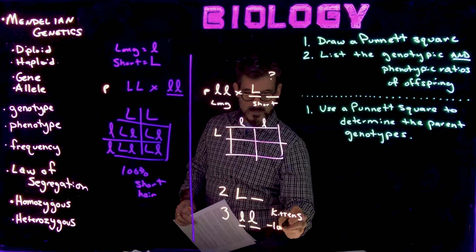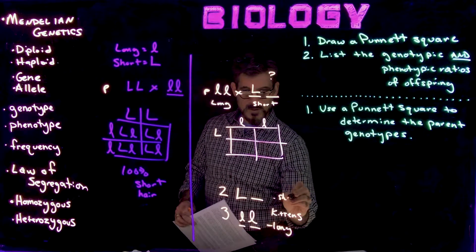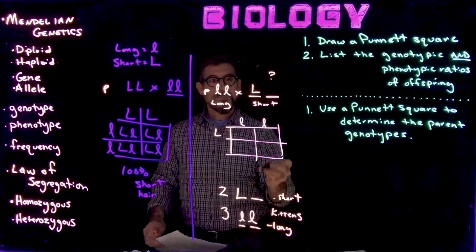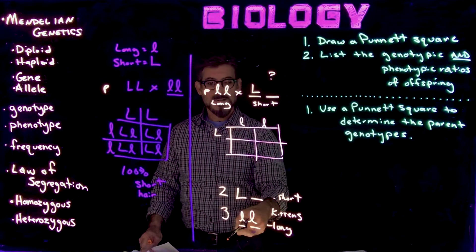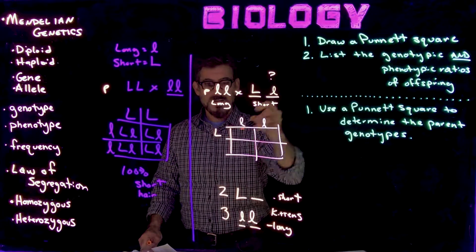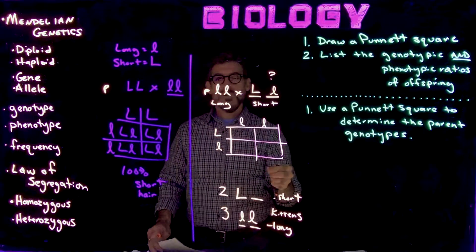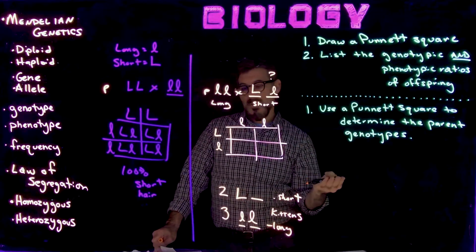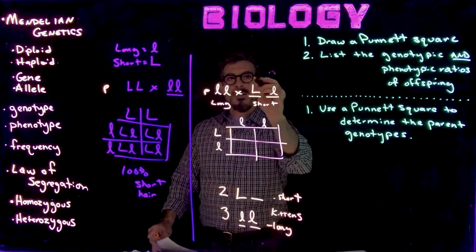So this is the long-haired kittens, short-haired kittens. So what that must mean is that in order for these kittens to exist at all, the other parent had to be able to give the allele for the long hair, right? So it has to be heterozygous.